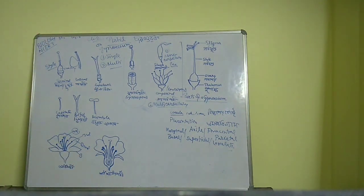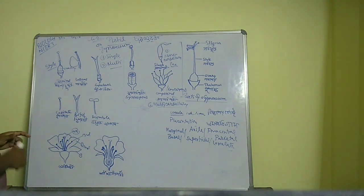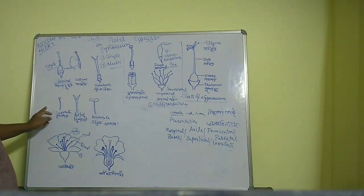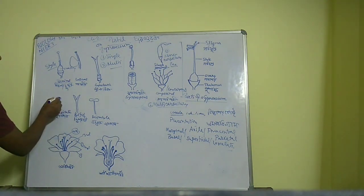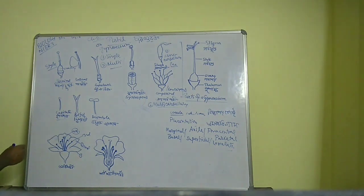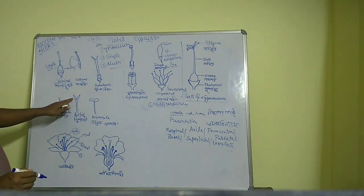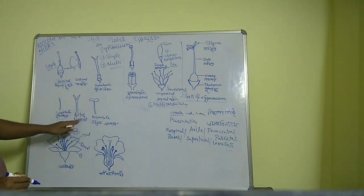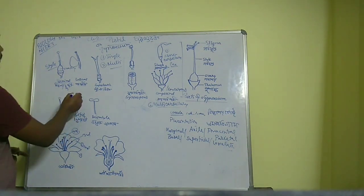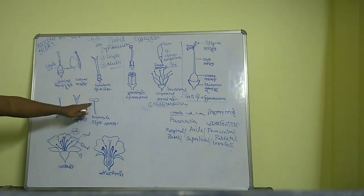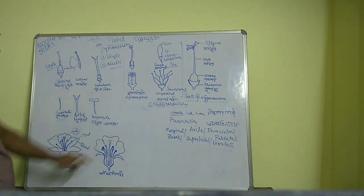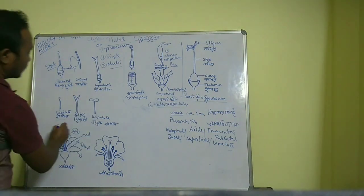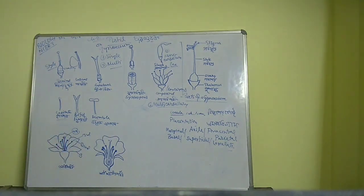Now we will discuss the stigma. The stigma is the terminal part of the gynoecium. There are various types of stigma. One type is capitate — it is round-headed. Another type is bifid — it has two parts. Another type is dumbbell-shaped. So these are the different types of stigma.